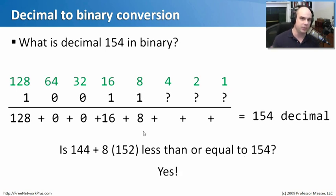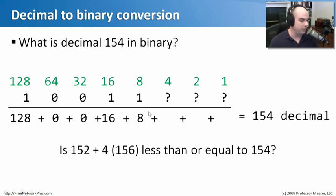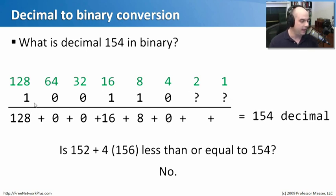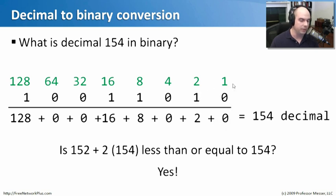Continuing: is 152 plus 4 — which is 156 — less than or equal to 154? No, so we put a 0. Is 152 plus 2 equal to 154? Yes, exactly 154, so we put a 1 there. Since we're already at 154, the last bit is not going to be used — we put a 0 in its place.